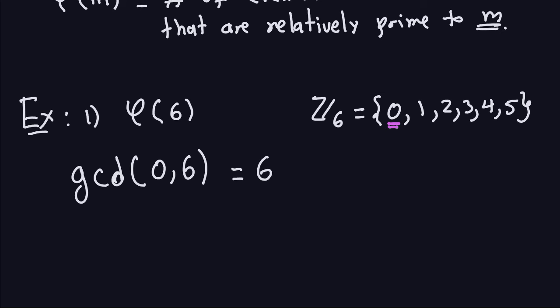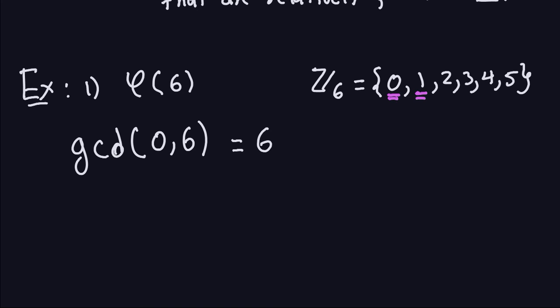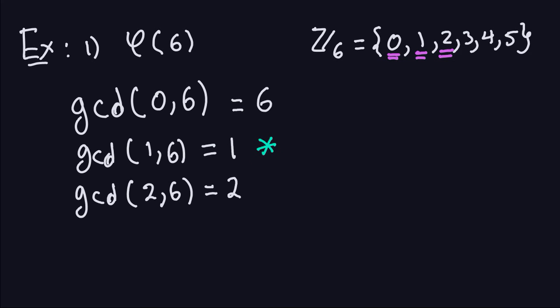Next is 1. The GCD between 1 and 6 — you can easily check that this is 1. So this is one of the numbers I'm going to count; I'll mark it with an asterisk. How about GCD between 2 and 6? That is not equal to 1 — it is actually equal to 2. So that is not something I have to count.